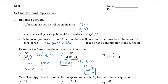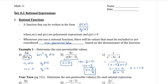In the third expression, we need to factor before finding the non-permissible values because the terms are not being multiplied. This becomes x divided by (x minus 4)(x plus 1). Now that we have two factors being multiplied in the denominator, we set each factor equal to 0: x minus 4 equals 0 and x plus 1 equals 0. Solving, x equals 4 and x equals negative 1 are the non-permissible values.